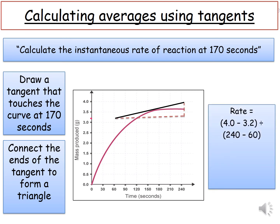Then we would use our equation, just as we would in maths, to calculate gradient, which is change in the y-axis divided by the change in the x-axis. Here, it is 4.0 minus 3.2 divided by 240 minus 60. Our final answer is 0.004 grams per second.